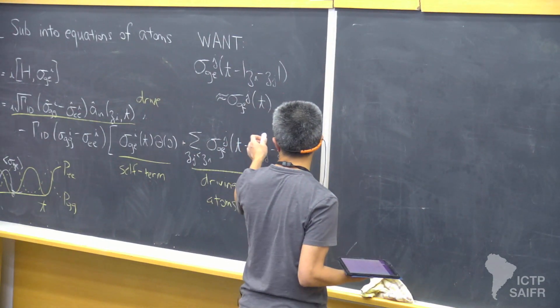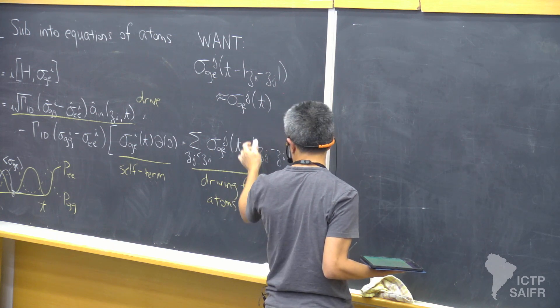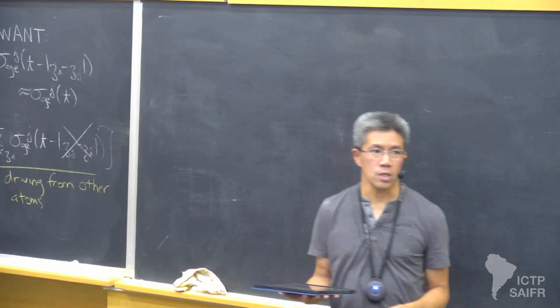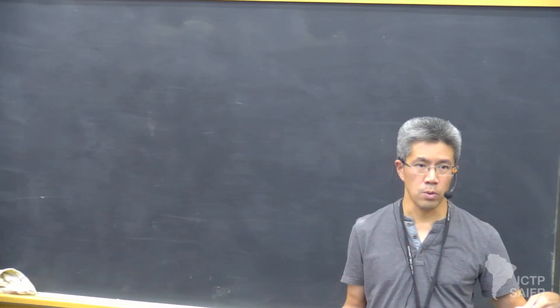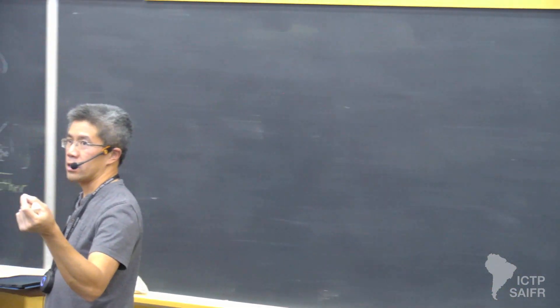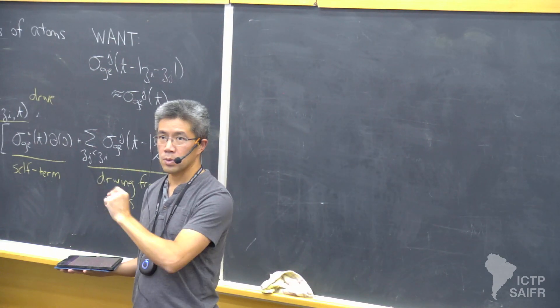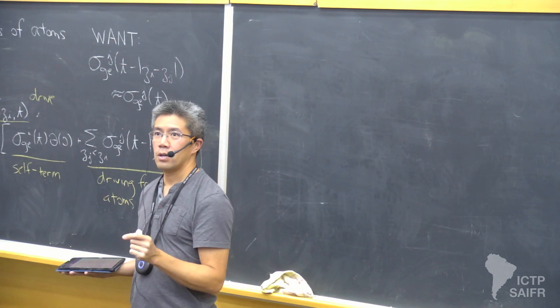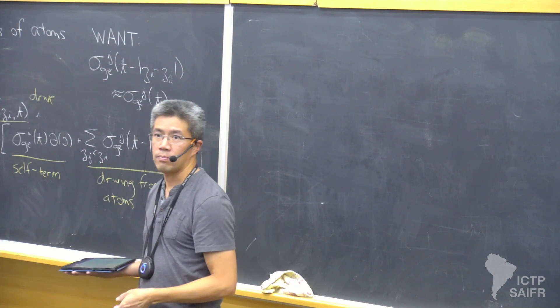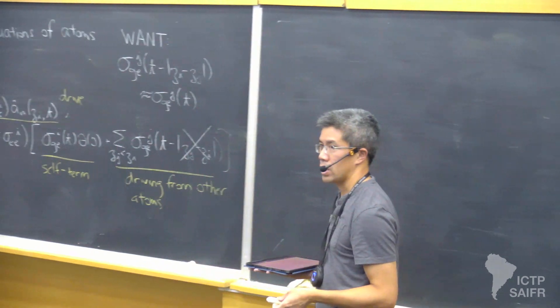So the end result is that for practical purposes, we can ignore this kind of time retardation. We formally integrate out the fields, then formally what you get is that one atom's evolution depends on atoms at previous times, because there's a speed of light for the photon from one atom to hit another. But for reasonable system sizes, you can ignore that time retardation.